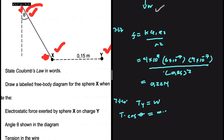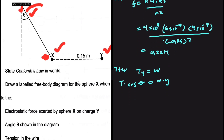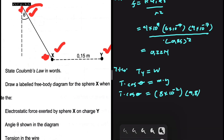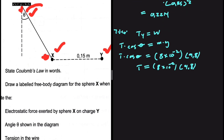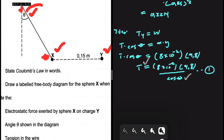The weight is the mass multiplied by gravitational acceleration. So tension times cos of theta equals mass times g, where mass is 8 times 10 to the minus 2 and g is 9.8. Making tension the subject, we get tension equals (8 times 10 to the minus 2 times 9.8) divided by cos of theta. As you can see, we have two unknowns — tension and theta — so we need to set up another equation to solve simultaneously.